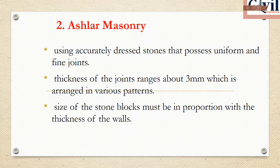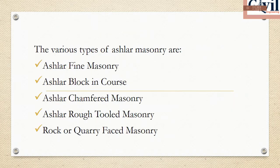We have learned how to use rubble masonry, where stones are used undressed or roughly dressed. Now we move to ashlar masonry. In ashlar masonry, stones are dressed to uniform size and shape. The joints are fine and uniform, with a joint size of 3 mm. The stone size must be in proportion with the thickness of the walls.